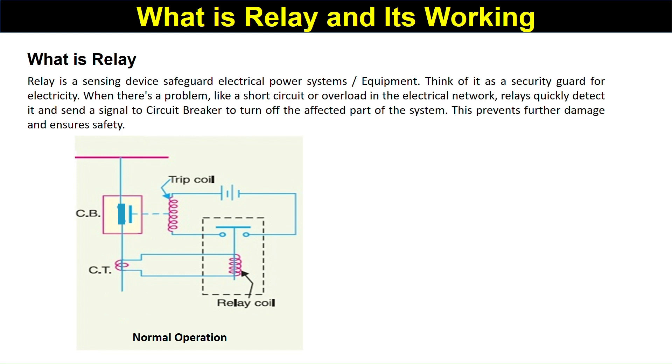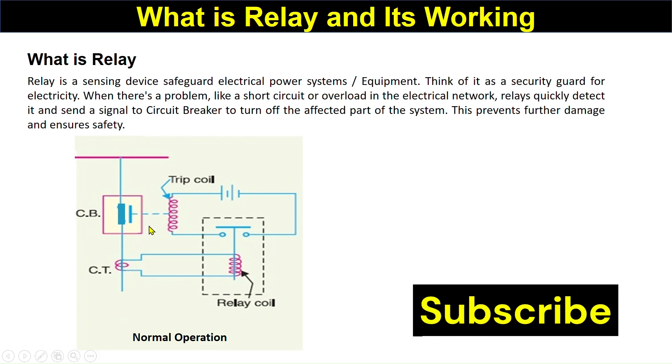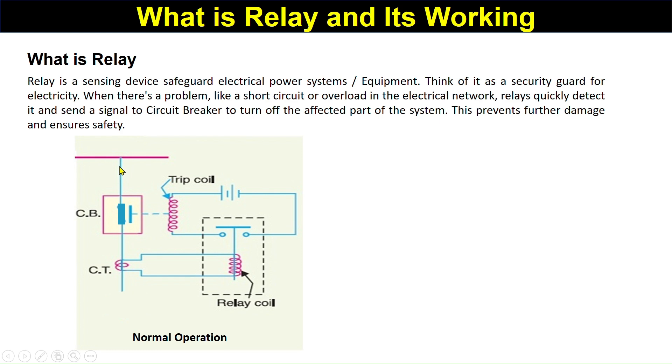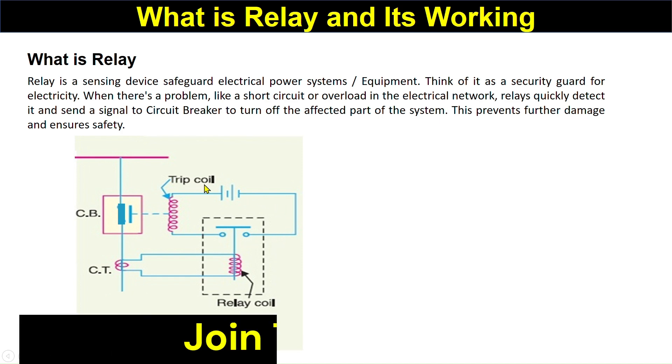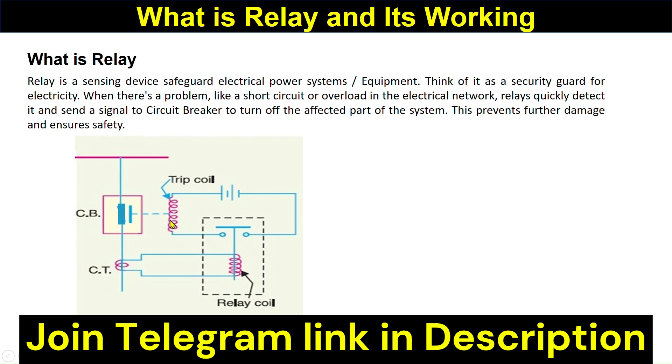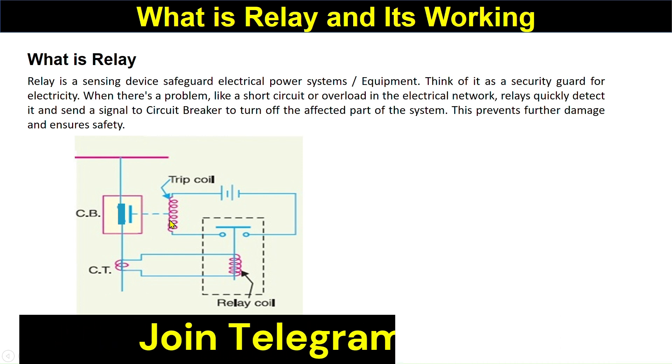This is a simple diagram that will explain the working of the relay. See, this is a relay, this is a system, and the current is going like this. Here is a CT - that is the current transformer - it is sensing the current. This current in the secondary will be normal, and with normal current, this relay coil does not pull this down. It will remain open and this tripping coil does not get energized. That means this circuit breaker remains closed and operation will be normal.